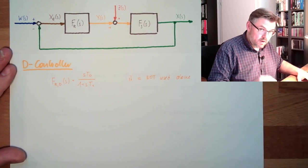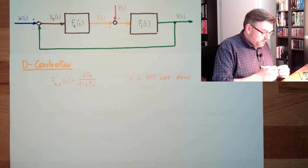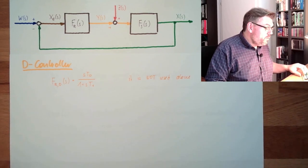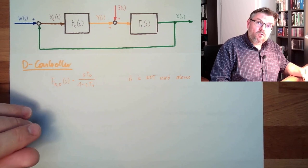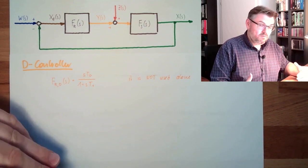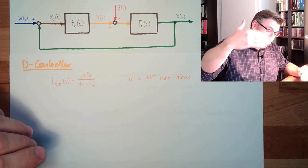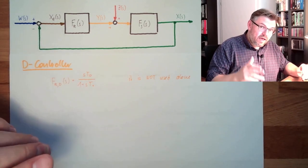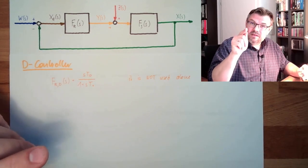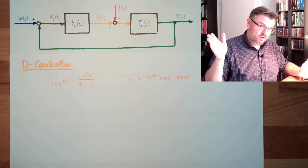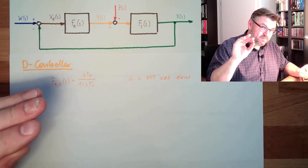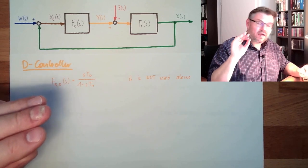However, quite often we are adding a D-controller to other controllers. A D-controller, we know that a D-element has a phase value of plus 90 degrees, and this helps us in stabilizing.